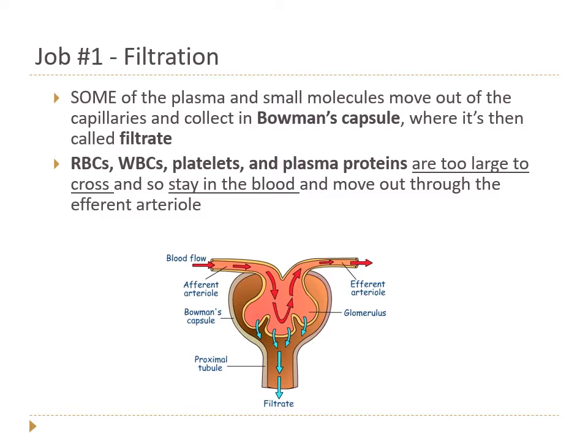During filtration, some of the plasma and small molecules move out of the capillaries into Bowman's capsule where they become the filtrate — the baby urine. Normally, large things like erythrocytes, leukocytes, platelets, and plasma proteins are too large and they stay behind in the blood, traveling out through the efferent arteriole and remaining in the bloodstream.